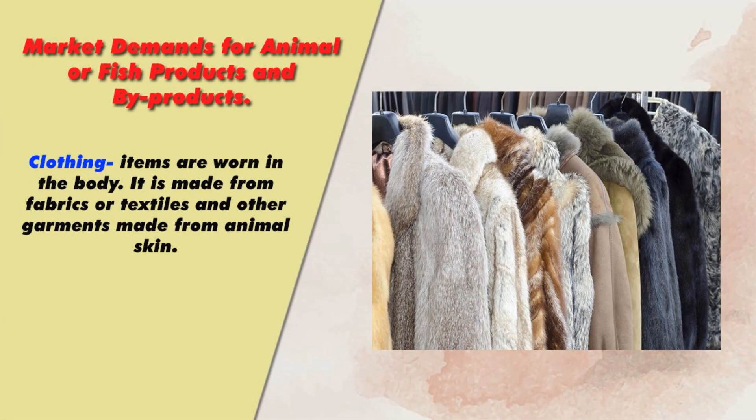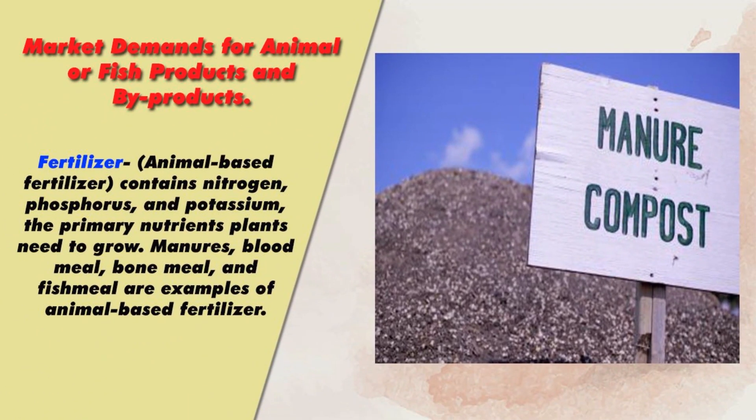Clothing — items worn on the body made from fabrics, textiles, or other garments made from animal skin. Animal-based fertilizer contains nitrogen, phosphorus, and potassium — the primary nutrients plants need to grow. Manures, blood meal, bone meal, and fish meal are examples of animal-based fertilizers.